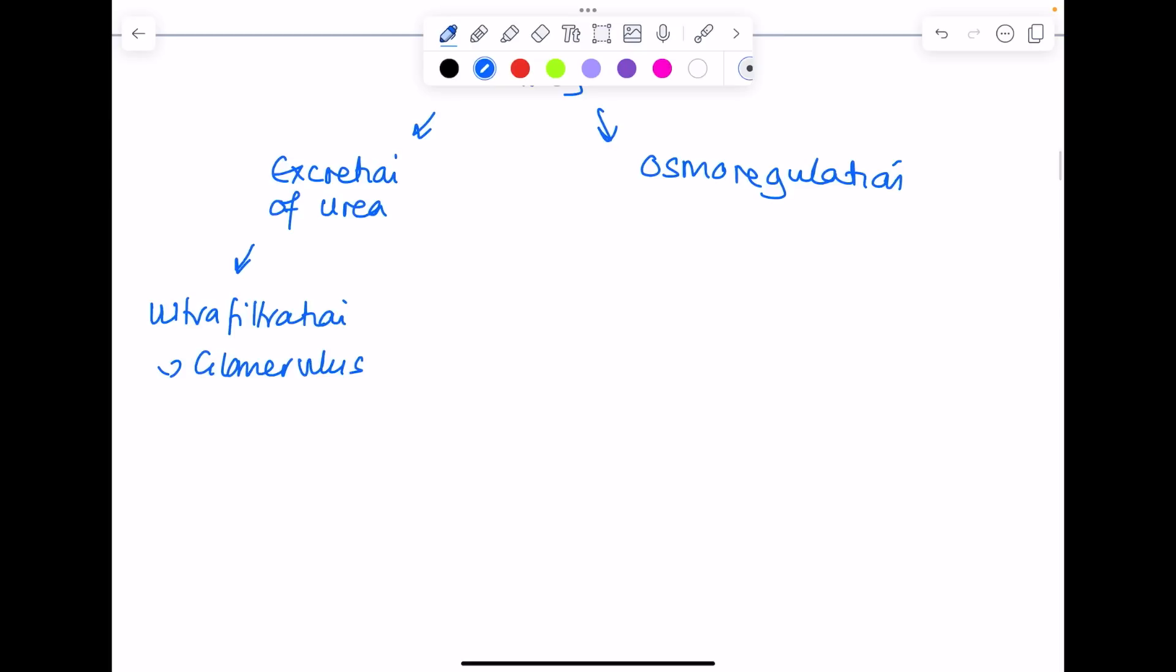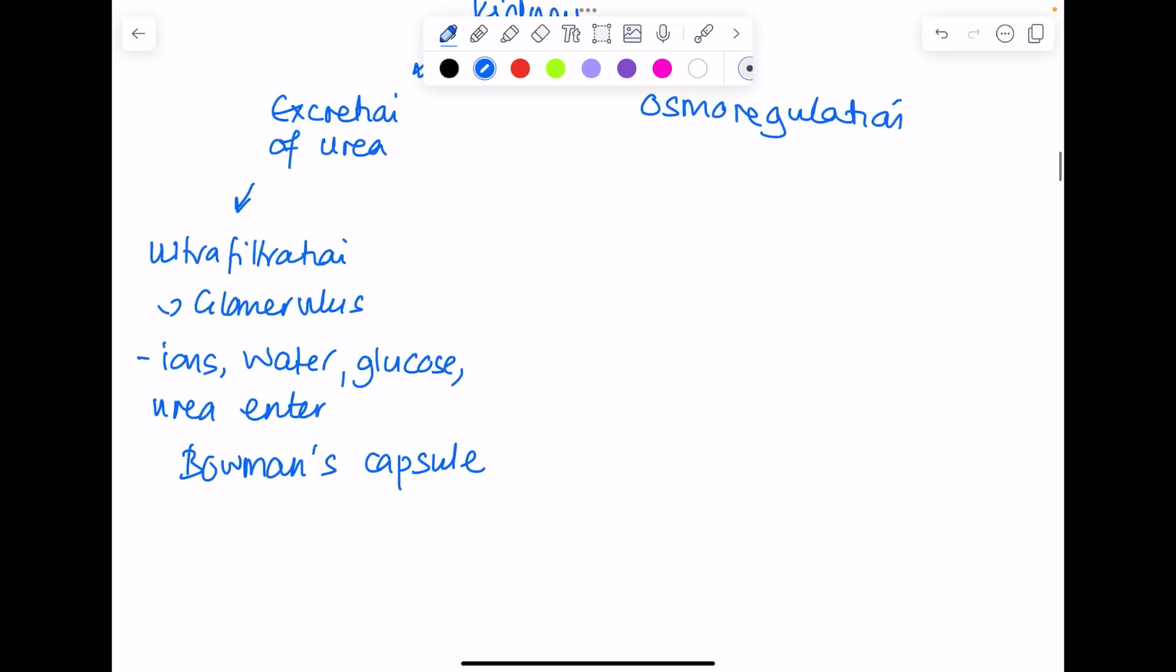This is when small molecules such as ions, water, glucose, and urea enter the Bowman's capsule. Make sure you can label that nephron. Excretion is taking place because urea moves from the blood in the glomerulus into the kidney nephron.